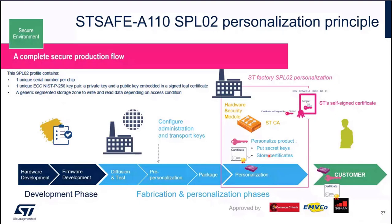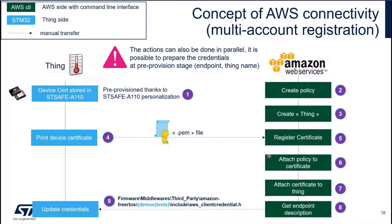So how does it work? Let's look at the concept of AWS connectivity with multi-account registration. The first step is to receive your STSAFE pre-provisioned via the SPL02 personalization. Then, on the Amazon Web Services side, using the CLI or the web dashboard, you will create a policy and create a thing.